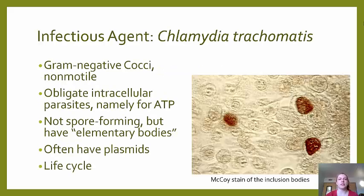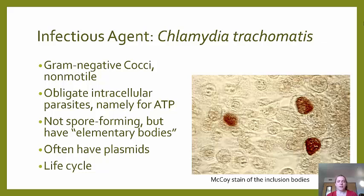Chlamydia trachomatis is a gram-negative cocci. It's non-motile and an obligate intracellular parasite. It does not produce its own ATP, which is partially why it was originally thought to be a virus. It doesn't have spores, but it does have elementary bodies — an extracellular non-vegetative state that spreads the disease. They often have plasmids and have a unique life cycle. Shown here is a McCoy stain of inclusion bodies.